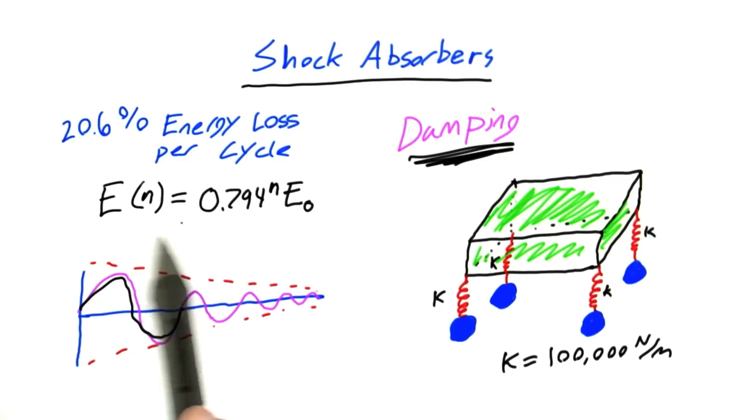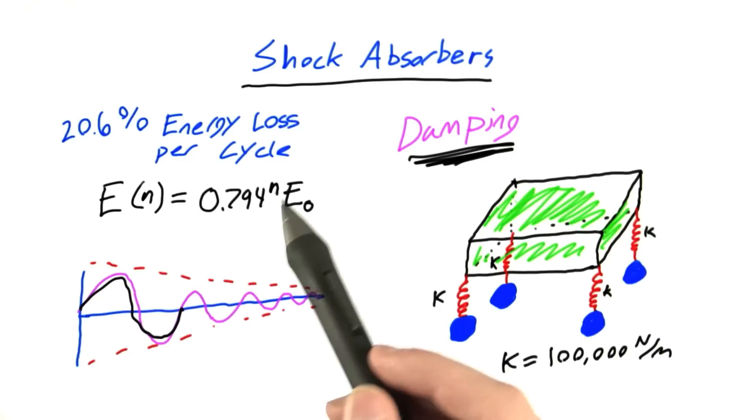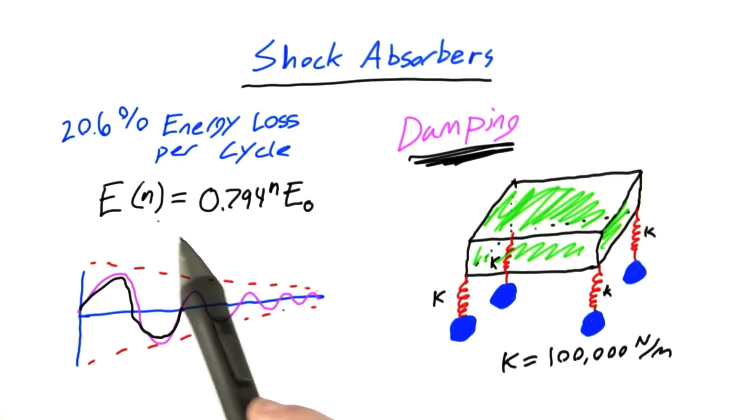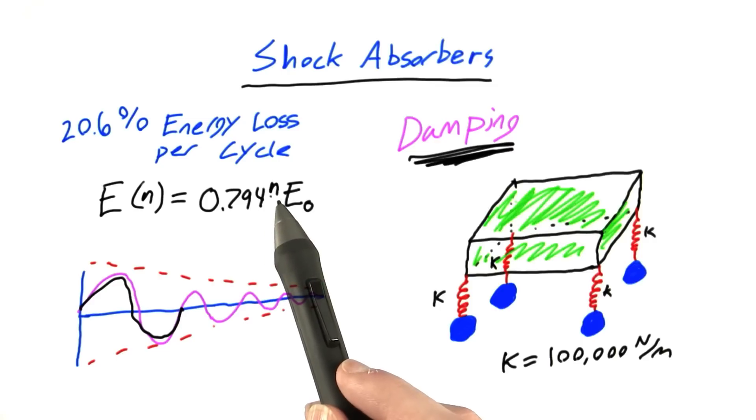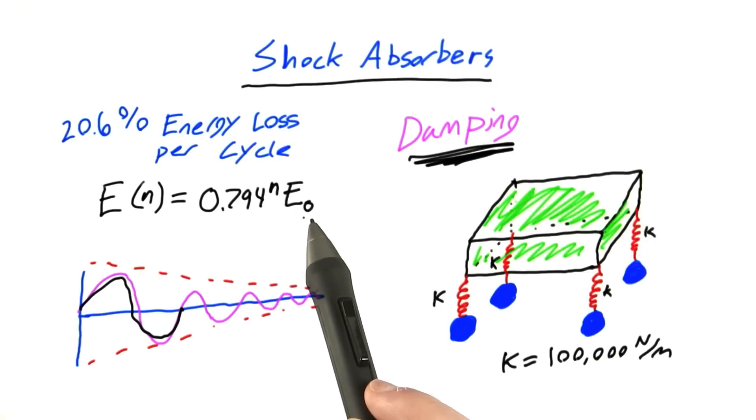So what this equation is saying is that after three cycles, for example, the amount of energy left in the oscillator will be equal to 0.794 to the third power times E0.